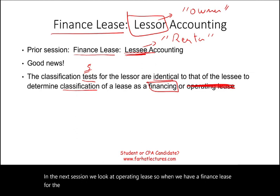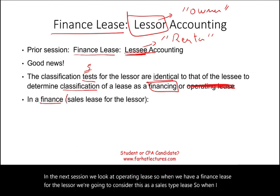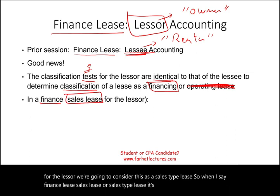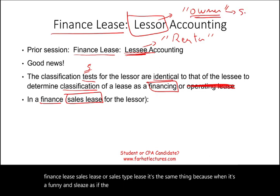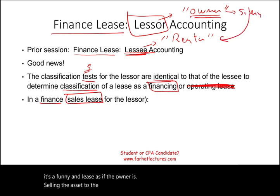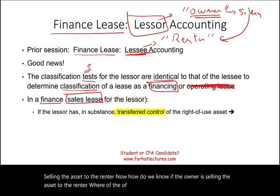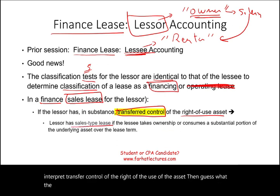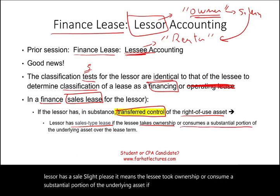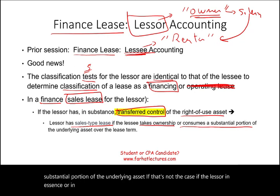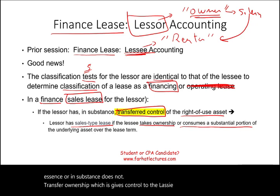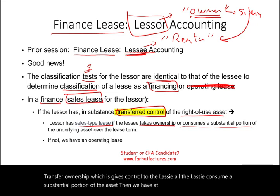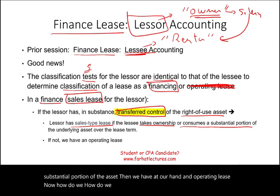For the lessor, a finance lease is considered a sales-type lease — they mean the same thing. When it's a finance lease, it's as if the owner is selling the asset to the renter. If the lessor in substance transfers control of the right to use the asset, the lessor has a sales-type lease. If the lessee took ownership or consumed a substantial portion of the underlying asset, that confirms it. If not, we have an operating lease.